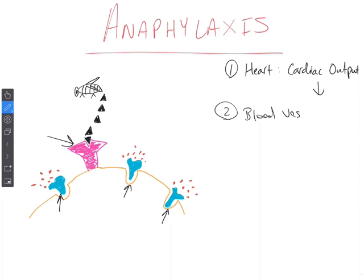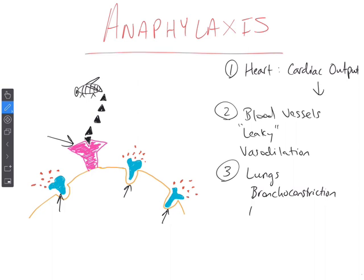Second is the blood vessels themselves — the blood vessels are going to become leaky due to increased permeability of the capillary membranes, and we'll see vasodilation as well. Third is the lungs — your patients will be experiencing bronchoconstriction and bronchospasm. Lastly is the skin, which is the most obvious outward sign, seen in the presence of urticaria and swelling, otherwise known as edema.